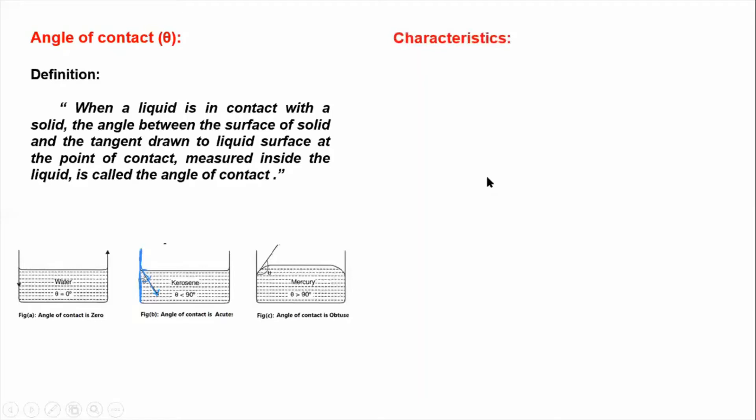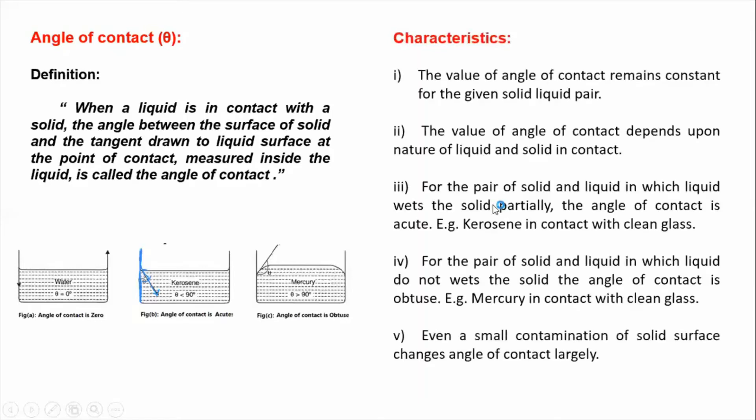After that, angle of contact, we learn the characteristics. So angle of contact for kerosene - kerosene it is acute, mercury it is obtuse, and for water it is zero. Now in the next article we have to learn the explanation why the angle of contact is acute, obtuse, and zero so that you remember.